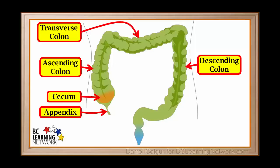The descending colon is on the left side of the body. Feces move downward in this section.